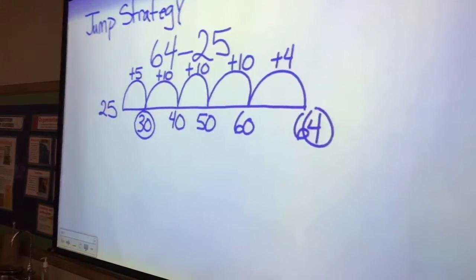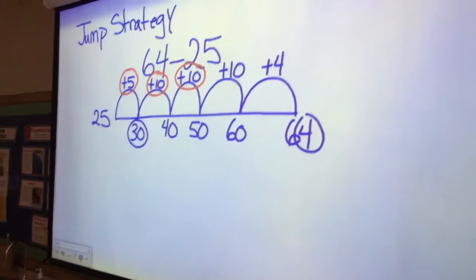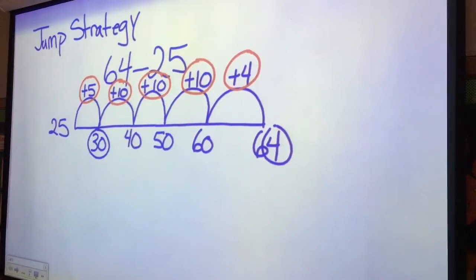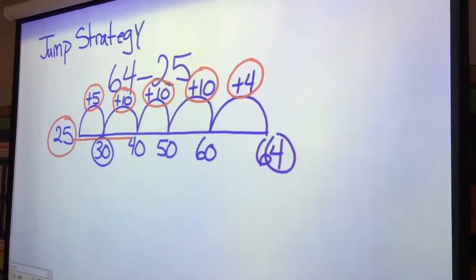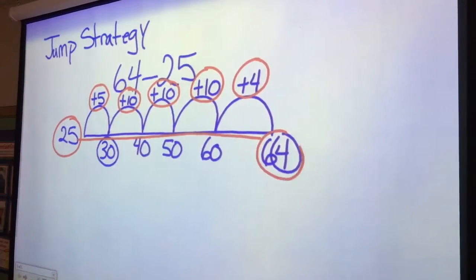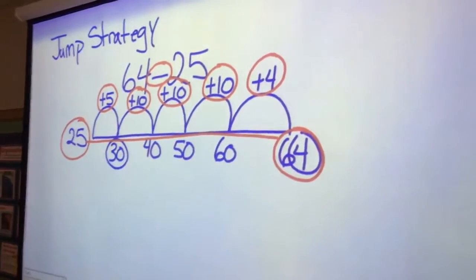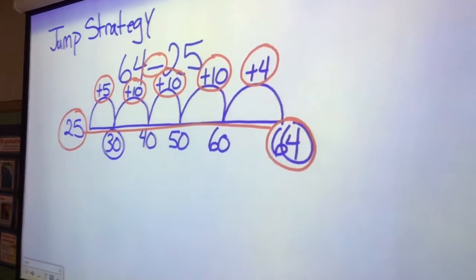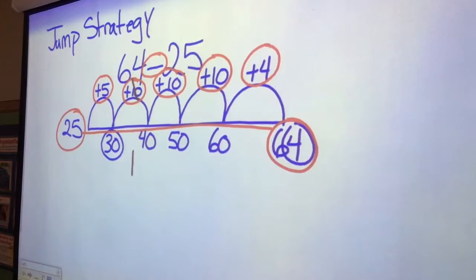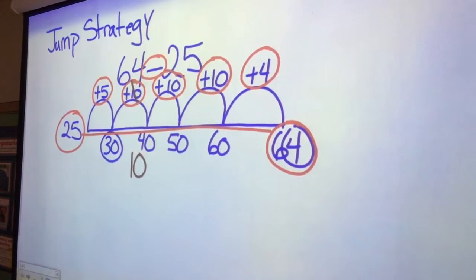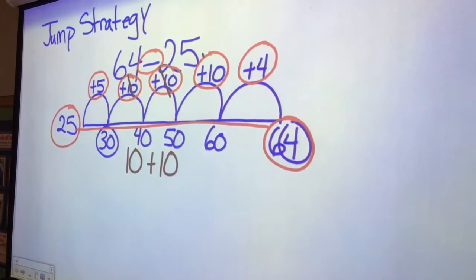Now the key is: these numbers here are the numbers that we're going to put back together to find out what our difference is — from 25 to get out to 64. Because again, this is a difference, or subtraction, problem. When I go back through, I'm going to add my tens together: ten plus ten plus ten more.